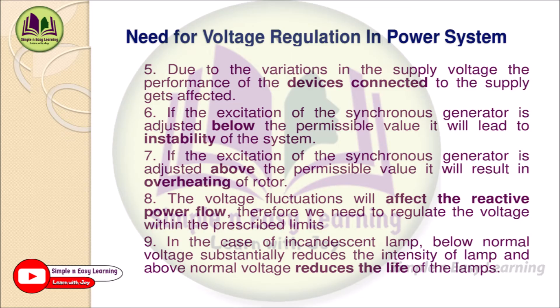Sixth, if the excitation of the synchronous generator is adjusted below the permissible value, it will lead to system instability. Constant excitation must be given to the synchronous generator to get a constant voltage output. If excitation goes below the permissible value there will be oscillations. Seventh, if excitation is adjusted above the permissible limit, it results in overheating — the field current increases beyond the limit, causing the field winding to heat up and potentially burn.